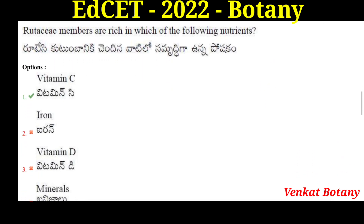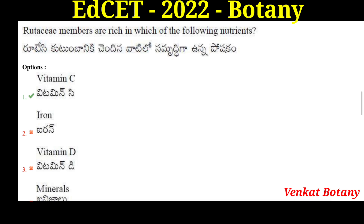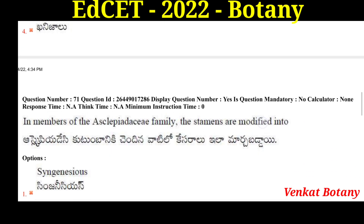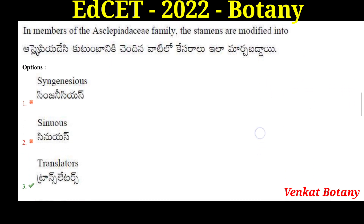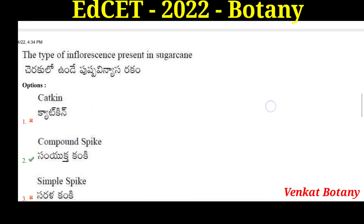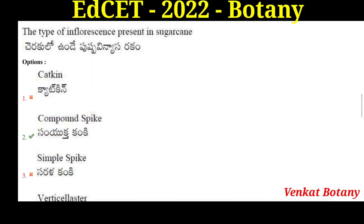Members of Rutaceae (Citrus family) are rich in which nutrients. In members of the Asclepiadaceae family, the stamens are modified into translators.